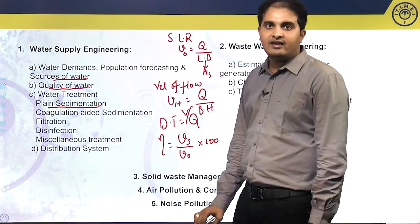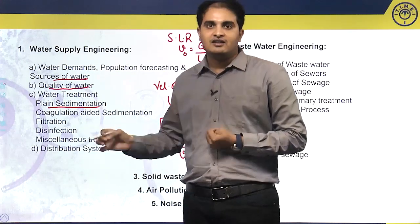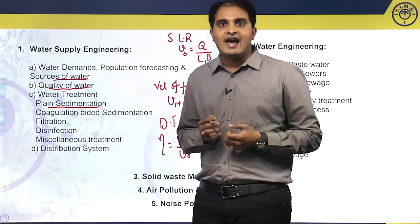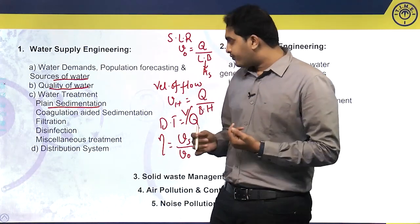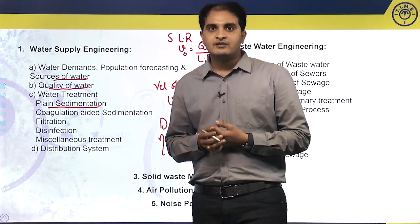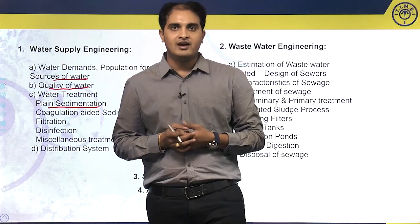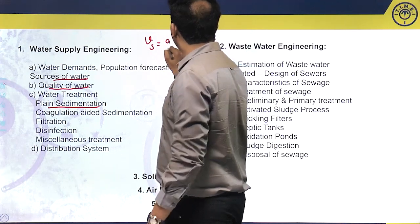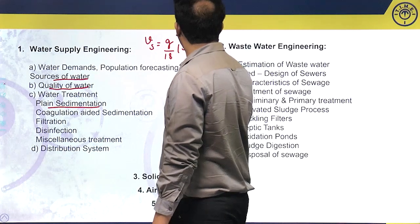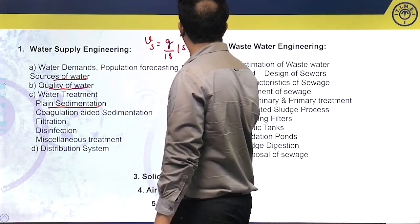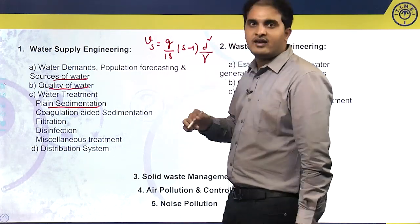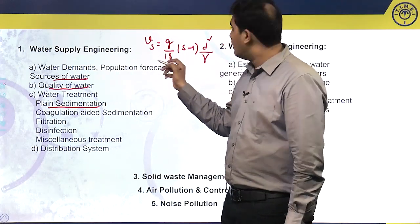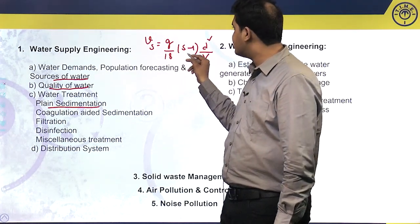These are the various topics included in plain sedimentation. The most important types of questions expected in sedimentation are either calculation of efficiencies or calculation of settling velocity using Stokes' law. Stokes' law gives the formula to calculate settling velocity: Vs = (g / 18) × (s − 1) × d² / γ. This is an important equation — at least once every two to three years, you can expect a question on Stokes' law.